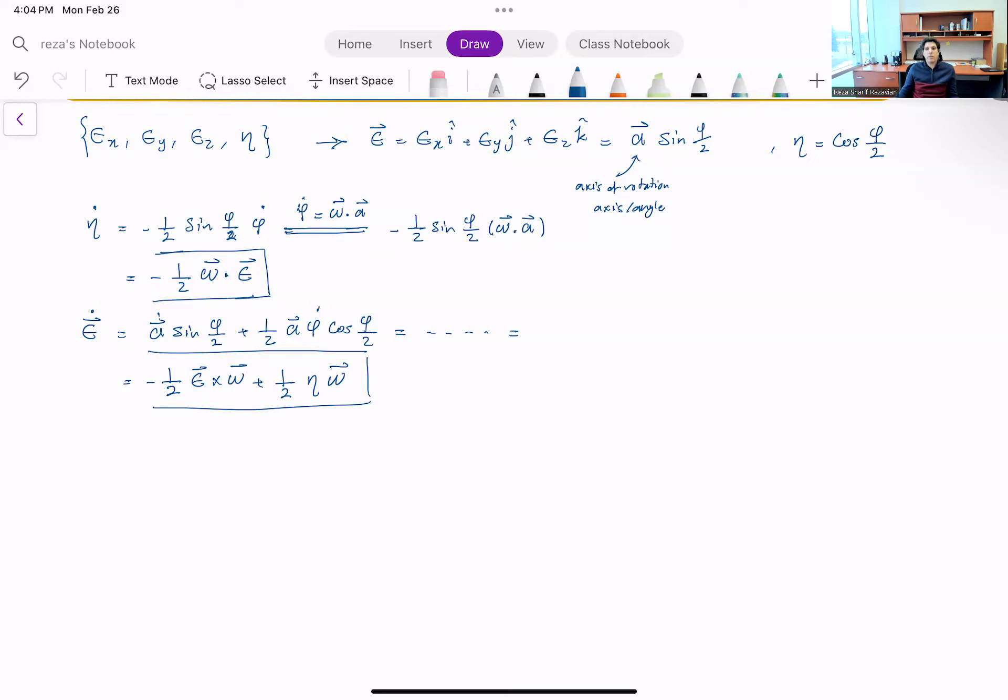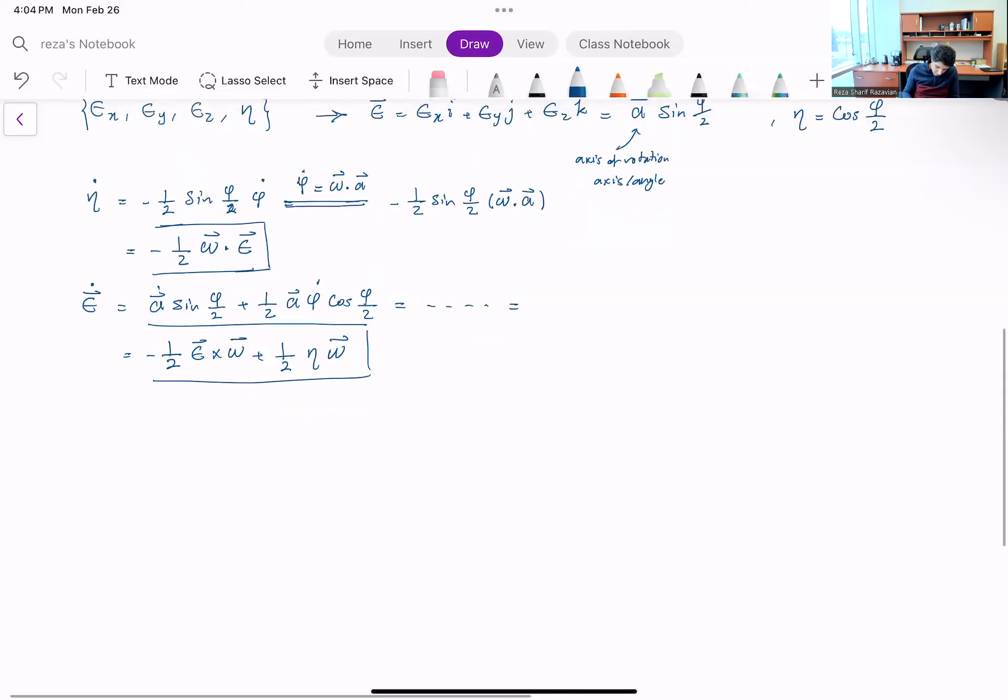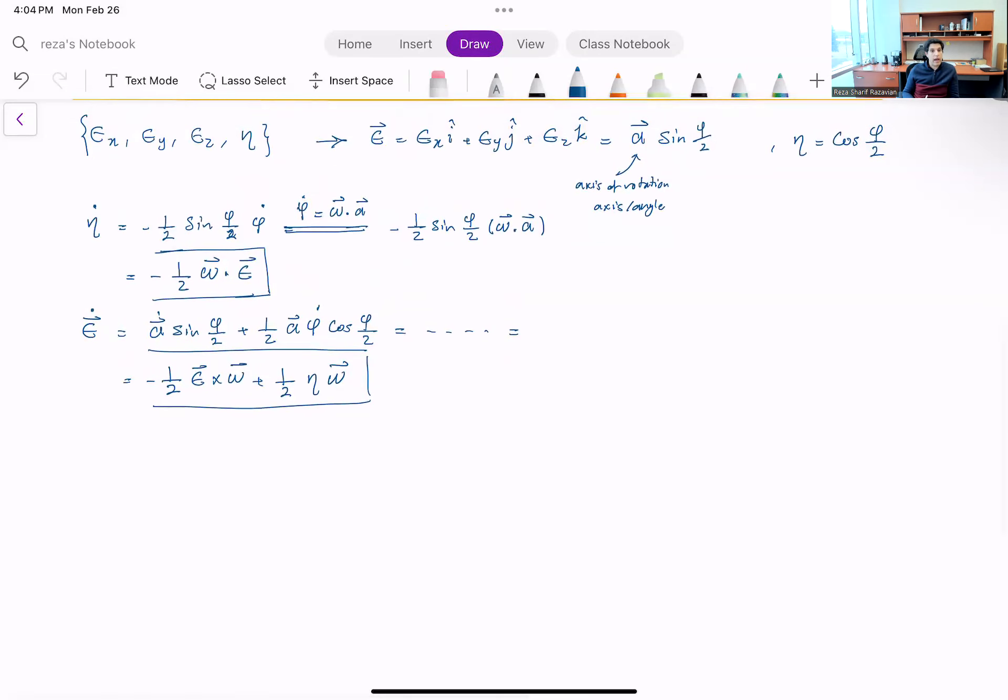So the Euler parameters are same concept but much nicer behaving set of parameters. Similar to what we had before with the axis angle.